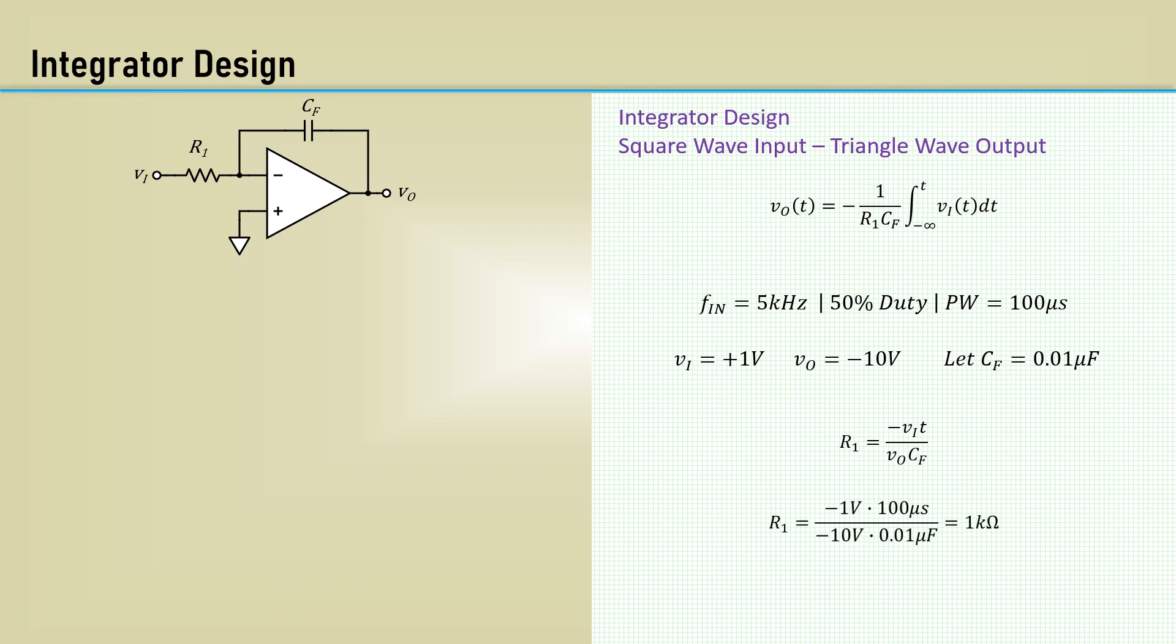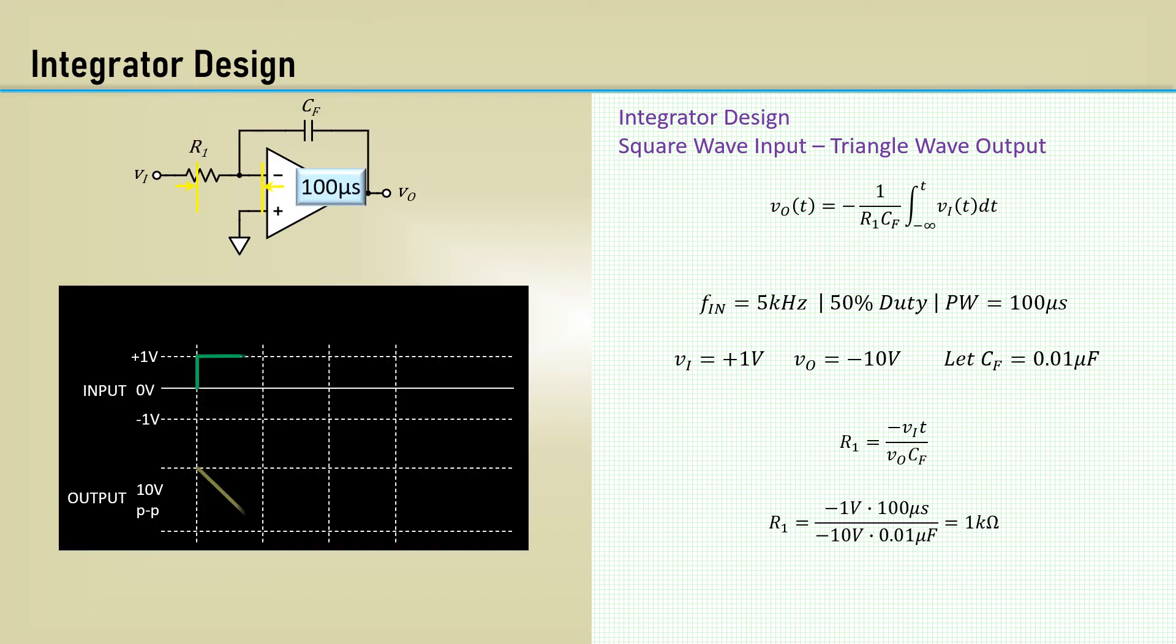Here's what's happening after steady state conditions are met. As the input steps to plus 1 volt, the feedback capacitor charges, and over the pulse width of 100 microseconds, the output is a linear ramp going 10 volts negative. When the input steps to negative 1 volt, the output ramps to 10 volts positive, and the cycle continues.